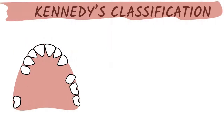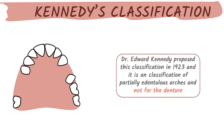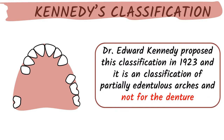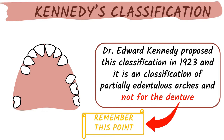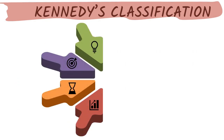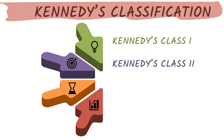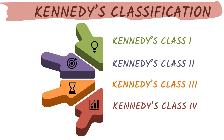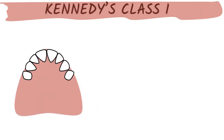First of all, you should know that this is a classification of partially edentulous arches — not for the denture. This is a very important point. It was given by Dr. Edward Kennedy in 1923 — remember this for competitive exams. Kennedy classified edentulous arches into four classes: Class 1, Class 2, Class 3, and Class 4.